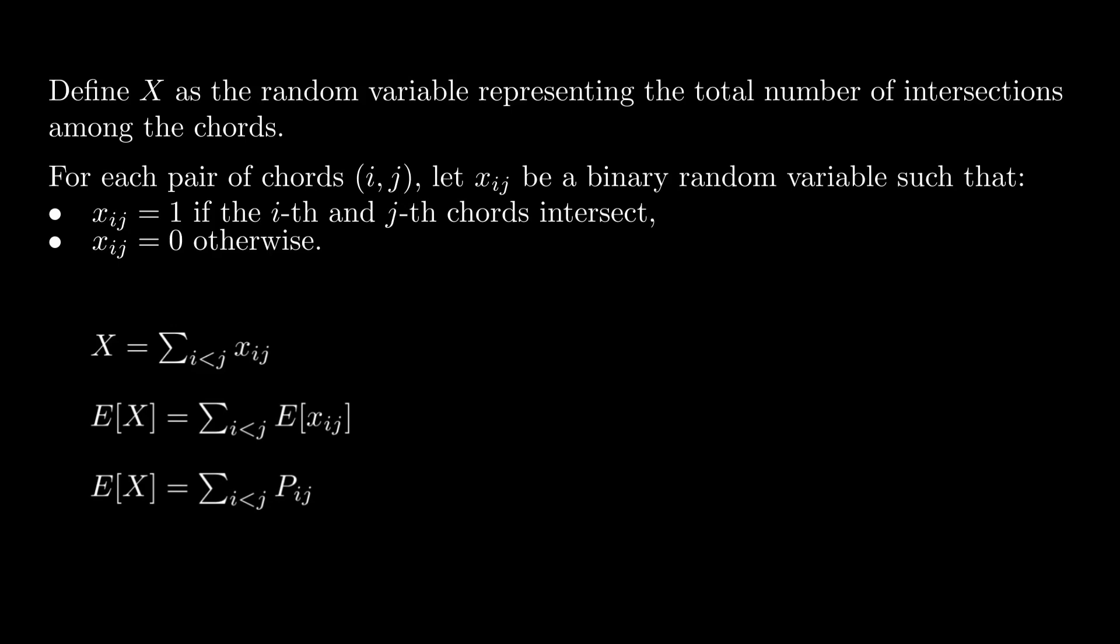There are 10 chords in total, so there are 10 choose 2, or 45 total pairs of chords. Hence, E[X] is equal to 45 times Pij since each Pij's are equal. Hence, the problem boils down to finding the probability that the i-th and j-th chords intersect.